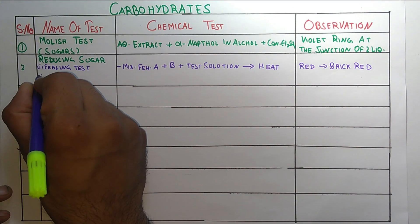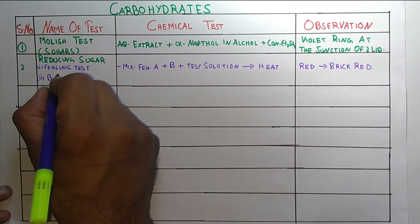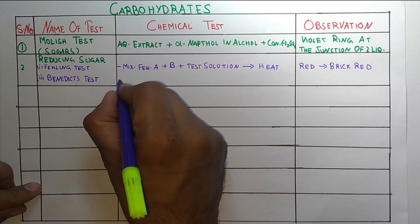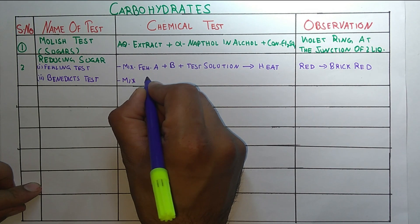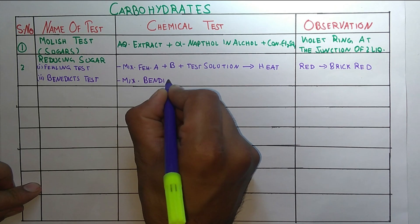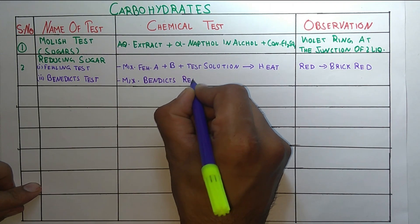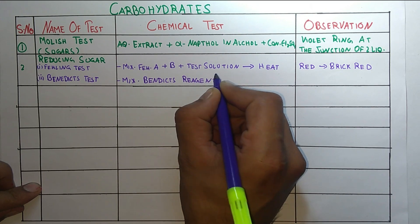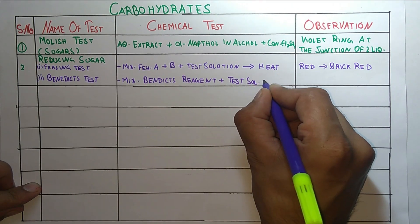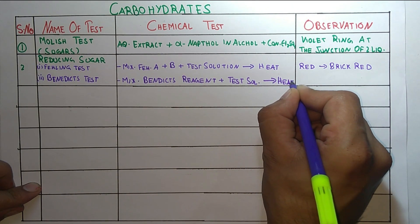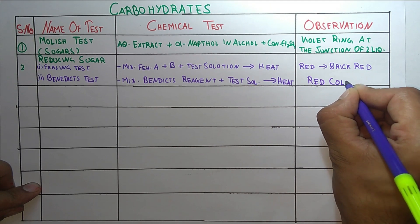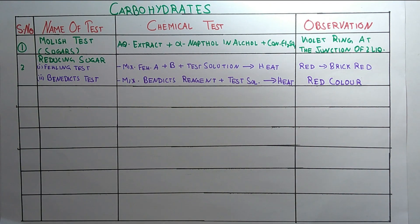The second test for reducing sugars is Benedict's test. The procedure is: mix equal volumes of Benedict's reagent, add the test solution, then heat. The color produced is red.